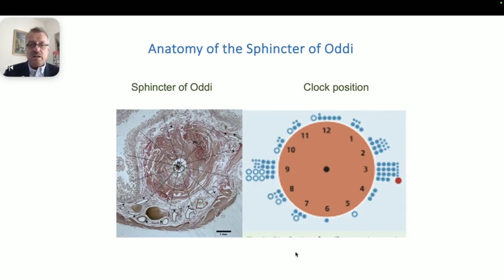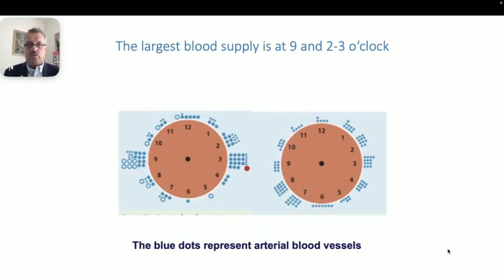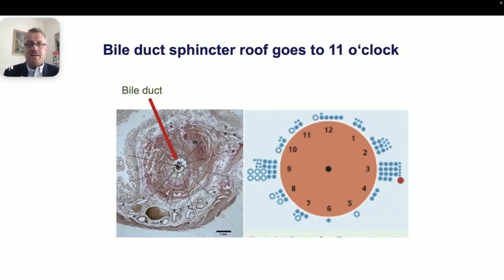This study from Yerjali shows us anatomic histologic correlates of the sphincter of Oddi and its blood supply. We see that most vessels are at the 9 and 3 o'clock positions, and the least amount of vessels are at the 11, 1, and 5 o'clock positions. Usually the cuts for biliary sphincterotomy are towards the 11 o'clock position, and for pancreatic duct sphincterotomy towards 1 o'clock. It is very important to remember where the largest blood supply areas are.